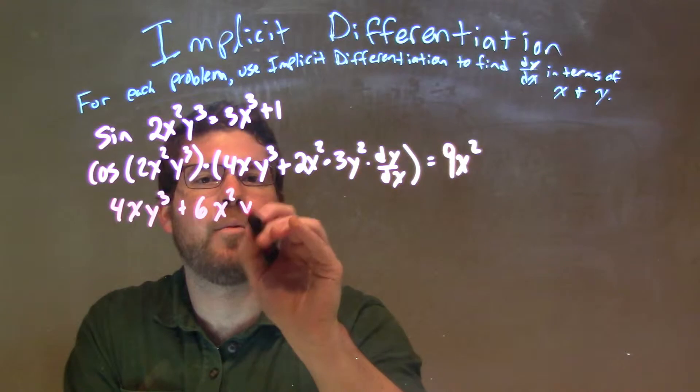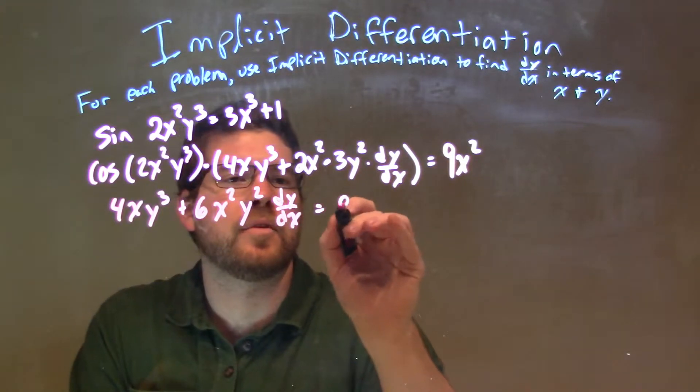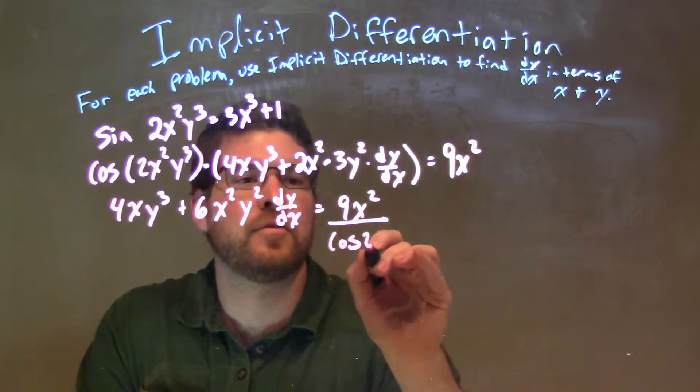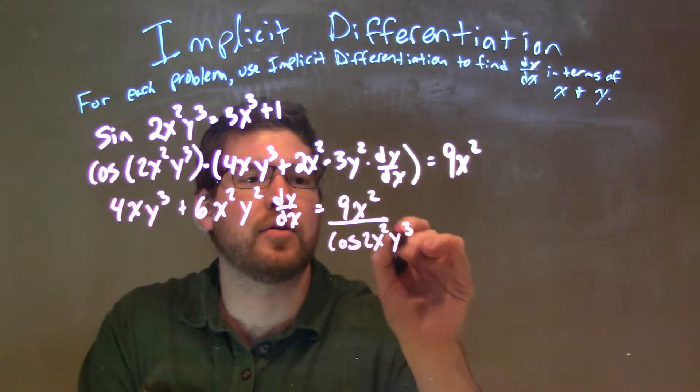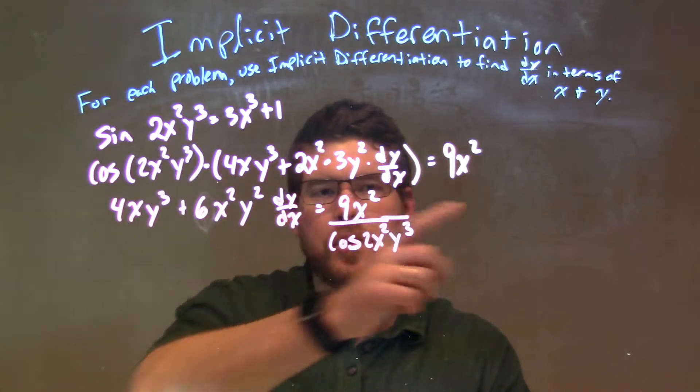9x squared all over cosine of 2x squared y cubed minus this is what came over, 4xy cubed.